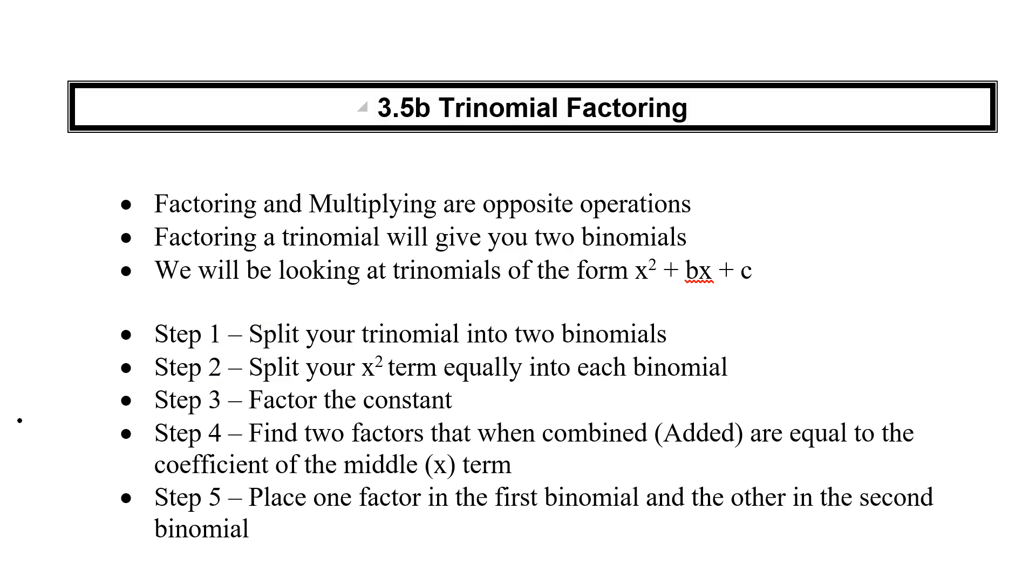So the first thing we're going to do is we're going to take our trinomial and we're going to split it into two binomials. And what I mean here is just literally writing out two sets of brackets to indicate this is what our trinomial will turn into. You're going to take your x squared term and split it. There's not going to be a number in front of our square term so we'll literally just take 1x and put it in the first set and 1x put it in the second set.